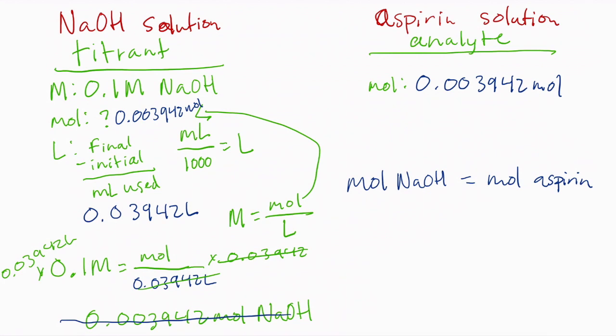Now, for post-lab question number one, it's going to ask us how many moles were in each tablet. Remember, this is the total number of moles that we had, but we had multiple tablets. First period used three, everybody else should have used two aspirin tablets. So in order to determine how many moles we had in each tablet, we're going to take that number of total moles and divide it by those two tablets. That will give us moles per tablet.